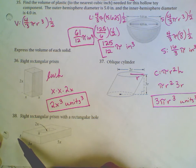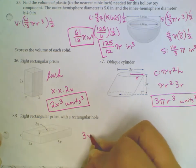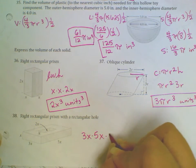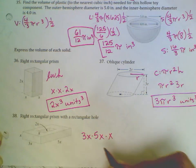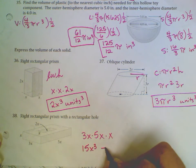So the volume of the larger will be length times width times height. So we will do 3x times 5x times x, which will give us 15x cubed. And then we need to subtract.